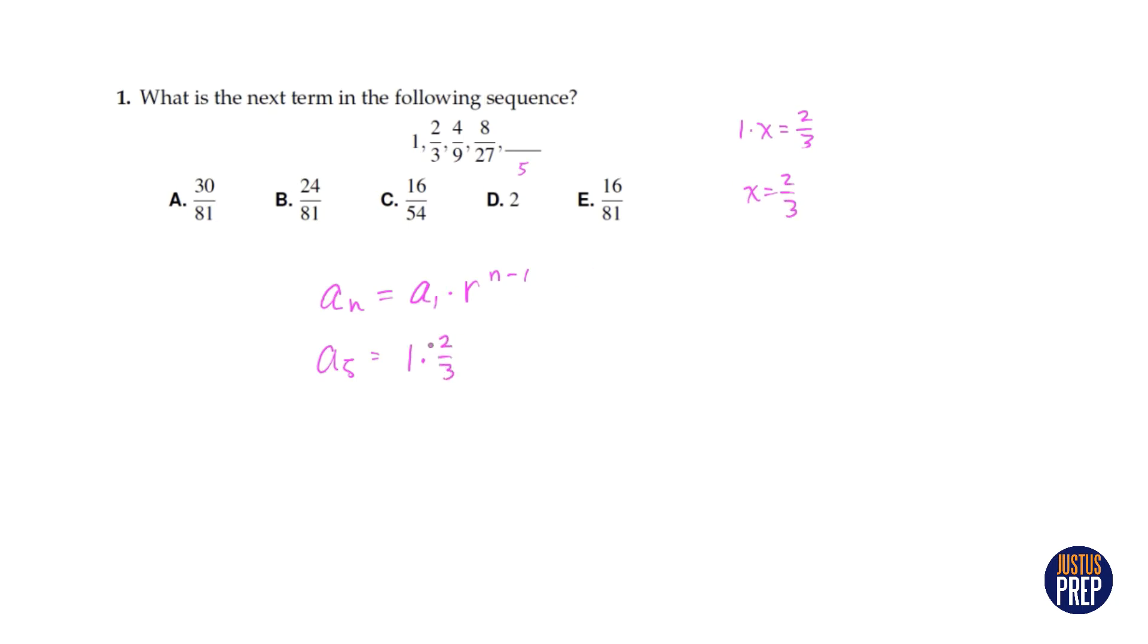So two-thirds raised to the, this is five minus one or four. So this is really two-thirds to the fourth power. We can distribute this exponent to the top and the bottom and we get 16 over 81. So the answer is e.